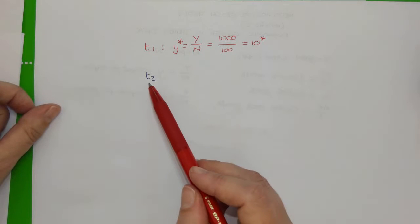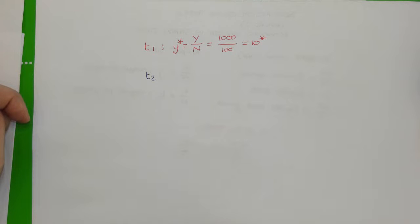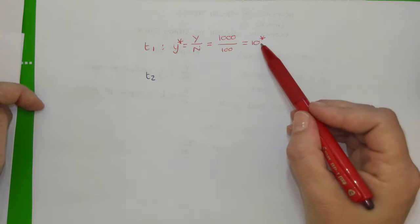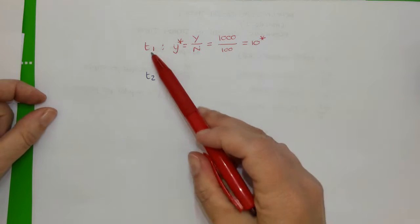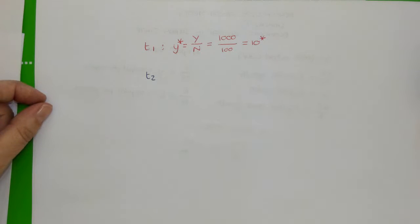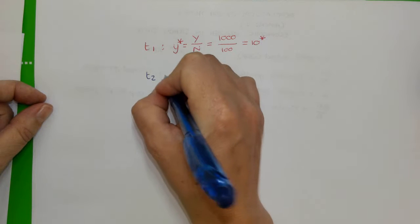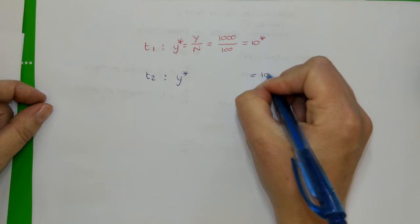When time period two comes along, if we are in steady state and none of the other parameters of the model have changed — there's been no change in the savings rate, no change in the depreciation rate of capital, or no change in the population growth rate — then in time period two, the value of output per person will still be 10. Because in steady state, output per person and capital per person do not change. So if in time period one output per person is 10, then in time period two output per person must also be 10.